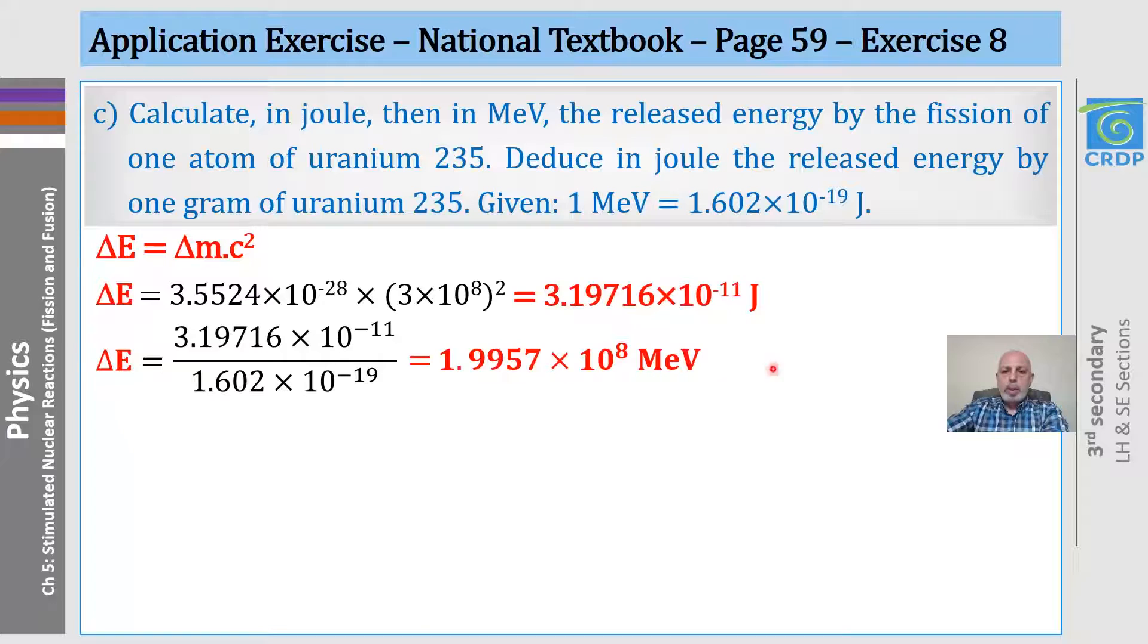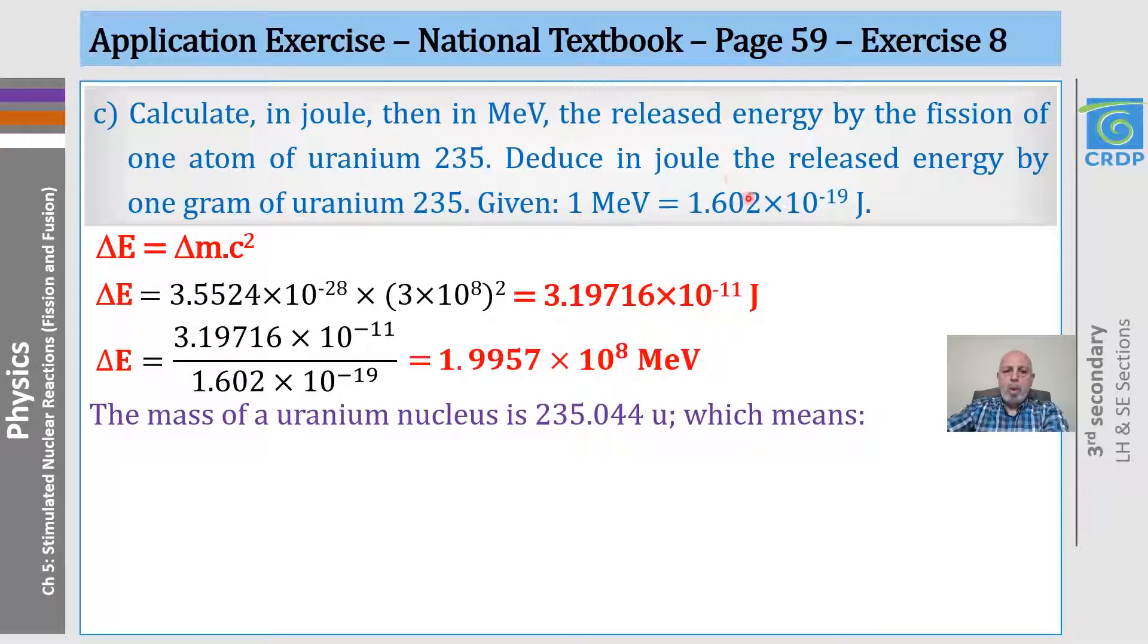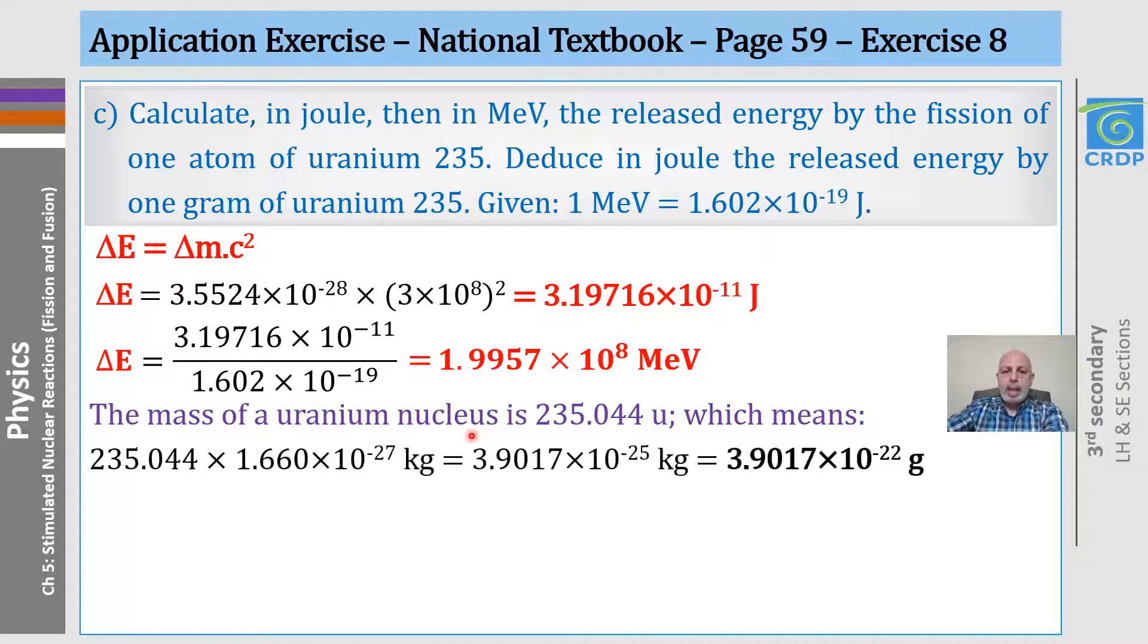Now, these two values, I remind you, are the values of the energy that is released by the fission of one atom of uranium. To answer the second part of the question, we need to know what the mass of a uranium nucleus is in kilogram, then in gram, by multiplying by 1.66 times 10 to the minus 27, then converting to gram.